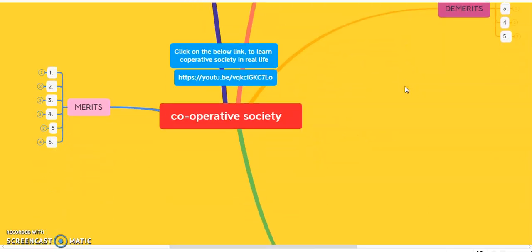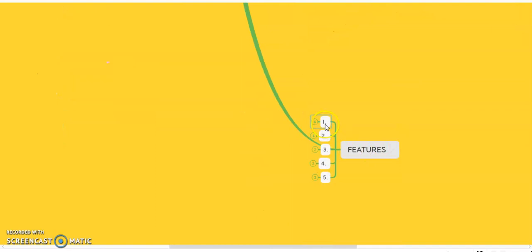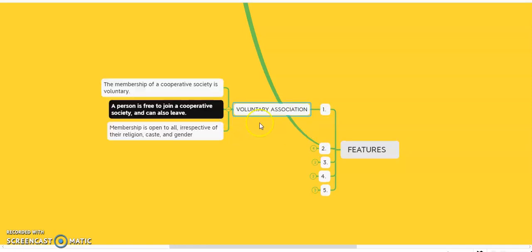Now we will discuss the features of the cooperative society. The first feature is voluntary association. Voluntary association means the membership of the cooperative society is voluntary. Nobody is forcing a person to join; every person joins by their own desire. A person is free to join and can leave the cooperative society anytime. Membership is open to all irrespective of their religion, caste, and gender.